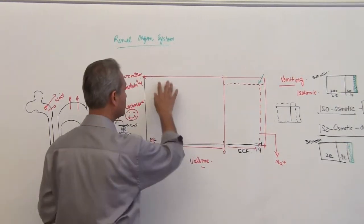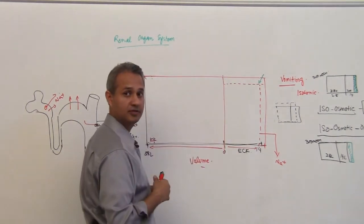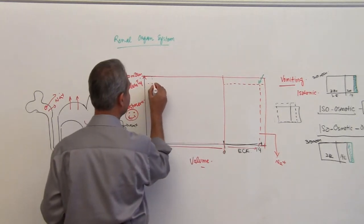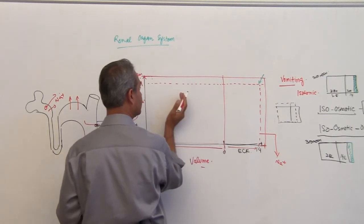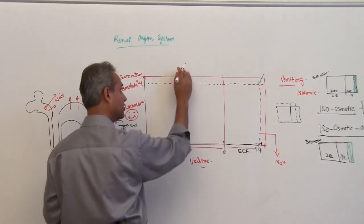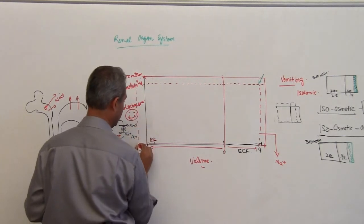Why? Because the osmolarity is higher over here. So now what is going to happen? What is going to move? The water is going to move from this compartment to this compartment, so that the osmolarity is pulled down and this compartment is going to increase in volume.